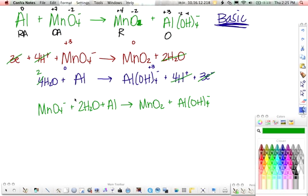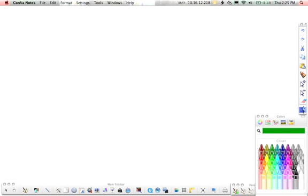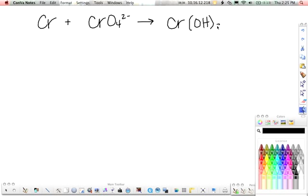And keep in mind, too, it doesn't matter what order you write these in. Because this is like saying 2 plus 3 is the exact same as 3 plus 2. So, if you put the aluminum first and the permanganate ion second, that's fine. It's all the same. All right. So, the next one that we're going to do is some chromium. We're going to take pure chromium, mix it with the chromate ion, and we're going to produce chromium hydroxide.